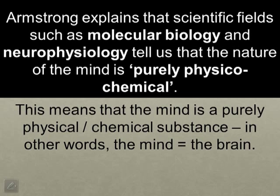Basically, he sums all this up by saying that all these different scientific discoveries tell us that the nature of the mind is purely physicochemical. This is an important term you'll need to know for Armstrong. Physical and chemical — he's saying that science tells us that the mind equals the brain; the mind is exactly the same thing as the brain, just a physical and chemical substance.